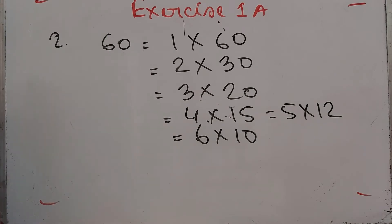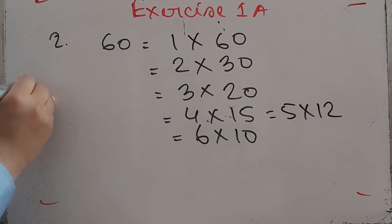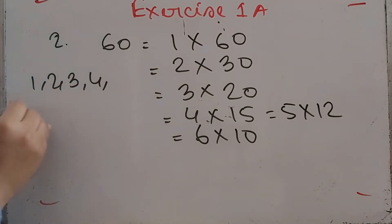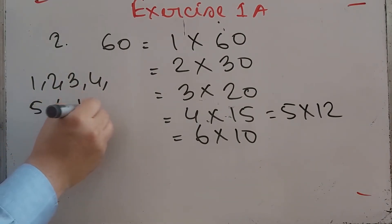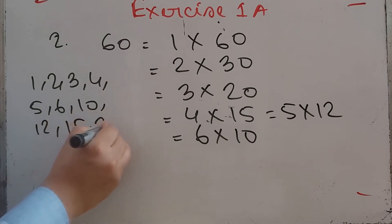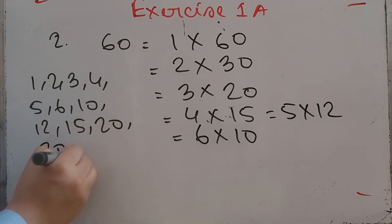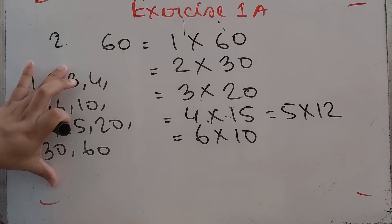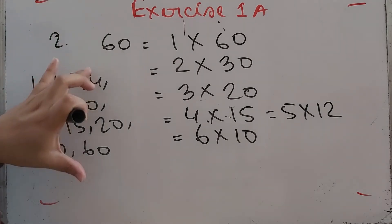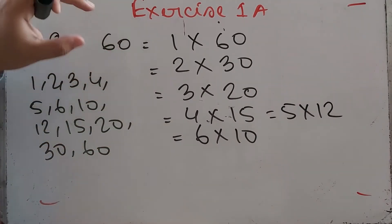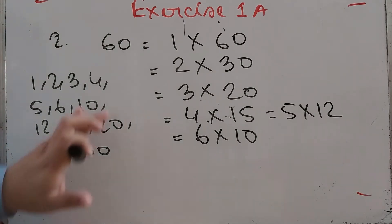So the factors of 60 are 1, 2, 3, 4, 5, 6, 10, 12, 15, 20, 30, and 60. That's a lot of numbers — and 60 is the multiple of all of them.